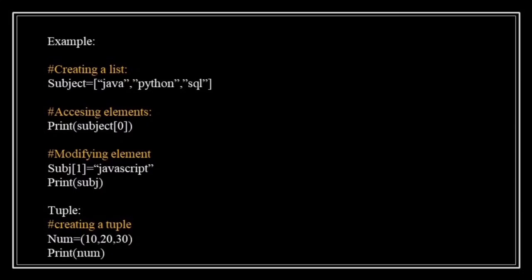For tuples, consider the example: num = (10, 20, 30). Here, we created a tuple named 'num' containing three elements: 10, 20, and 30. We can access elements by using their index. Tuples are immutable, meaning we cannot change their elements after creation. Trying to do so will raise a TypeError.